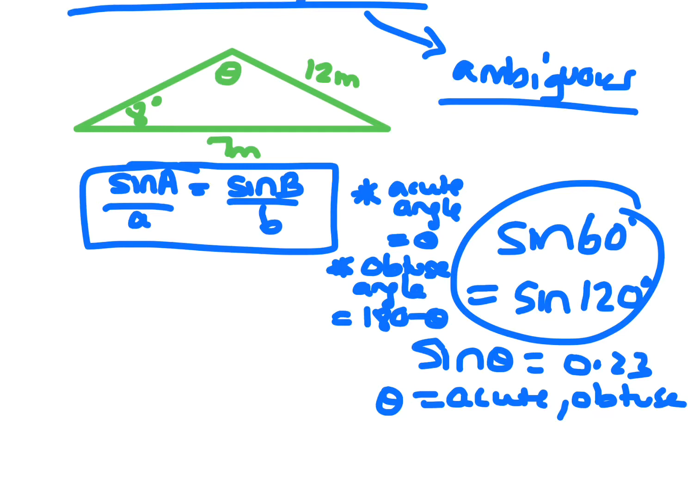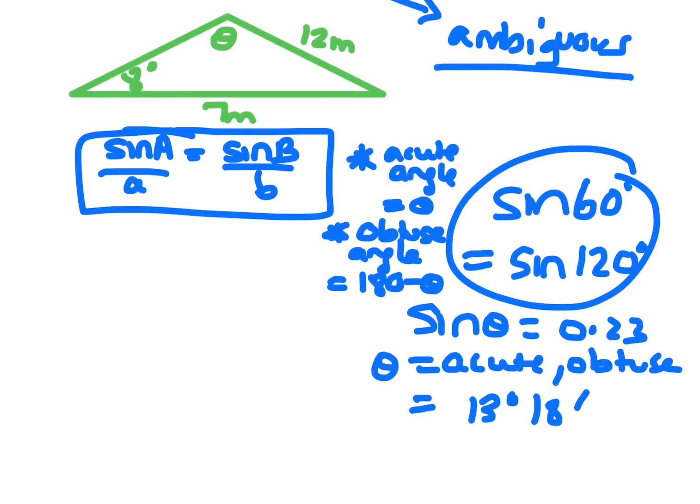When you get that on this question, you get 13 degrees 18 minutes. Then once you've done that, you've got to go 180 minus theta. So it's 180 minus 13 degrees 18 minutes, and you end up with 166 degrees 42 minutes as your angle.